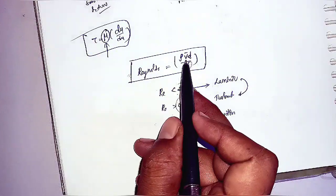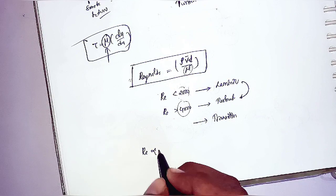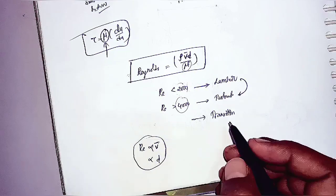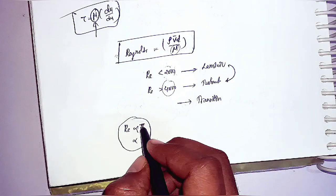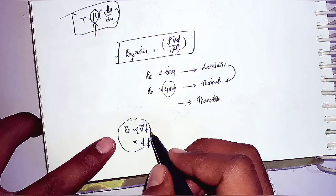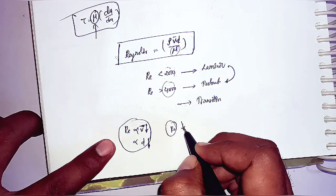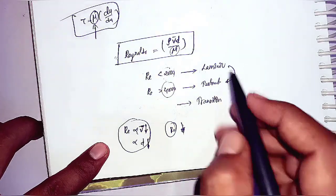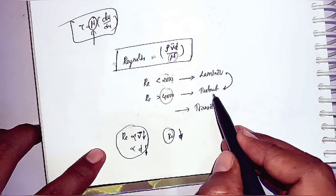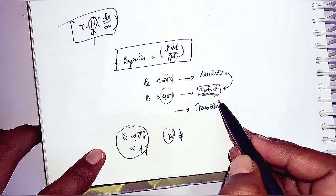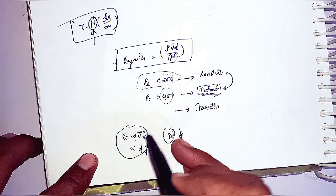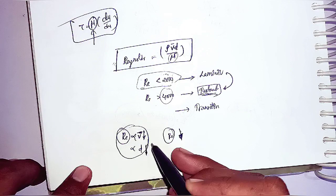The Reynolds number is directly proportional to both average velocity and pipe diameter. To maintain laminar flow, we need to keep both the velocity and the diameter of the pipe very low. We maintain a low Reynolds number because in laminar flow we can easily predict energy losses and pumping power requirements, which we cannot do in turbulent flow — that is why we prefer laminar flow for general purposes.